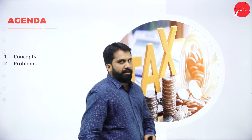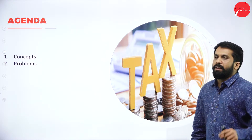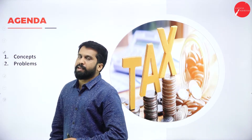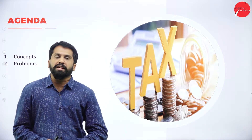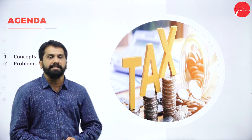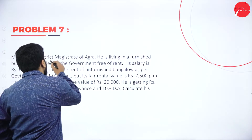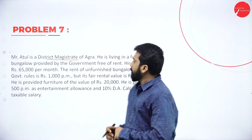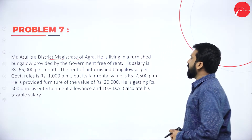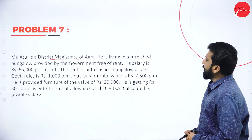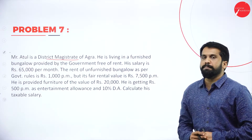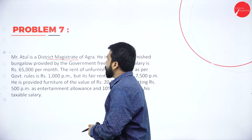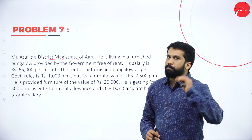The agenda for the day is very simple. Mr. Atul is a District Magistrate of Agra. He is living in a furnished bungalow provided by the government free of rent. His salary is 65,000 per month. The rent of unfurnished bungalow as per government rule is 1,000, paid by the employer.